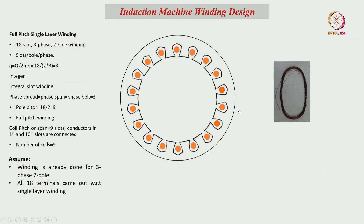Let us consider an example: 18 slot, 3 phase, 2 pole winding. Slots per pole per phase equals 3; since it is an integer, the integral slot winding is possible. Pole pitch equals 9, that is 18 divided by 2. Let us consider it is a full pitch winding, then coil sides per slot will be 1, single layer winding, and coil pitch equals pole pitch — 9 slots is the coil pitch.